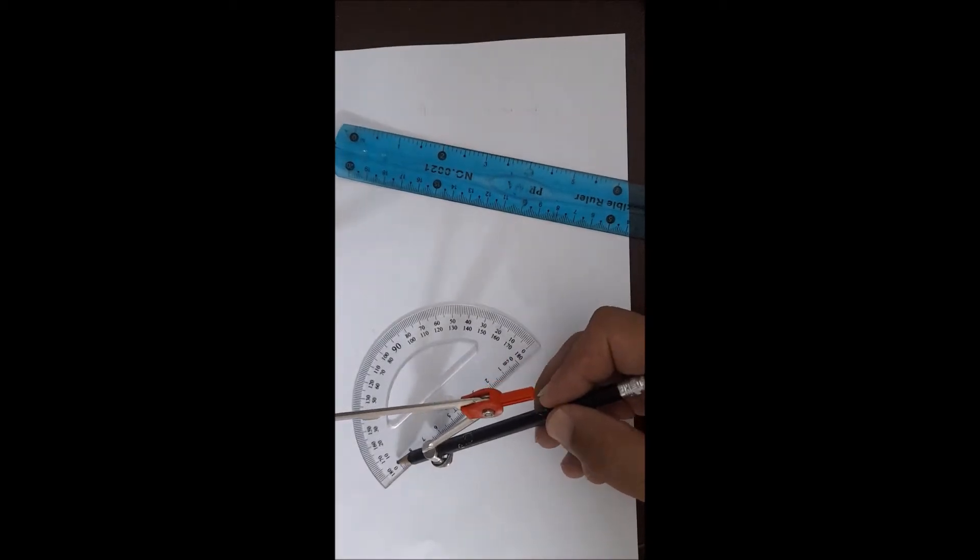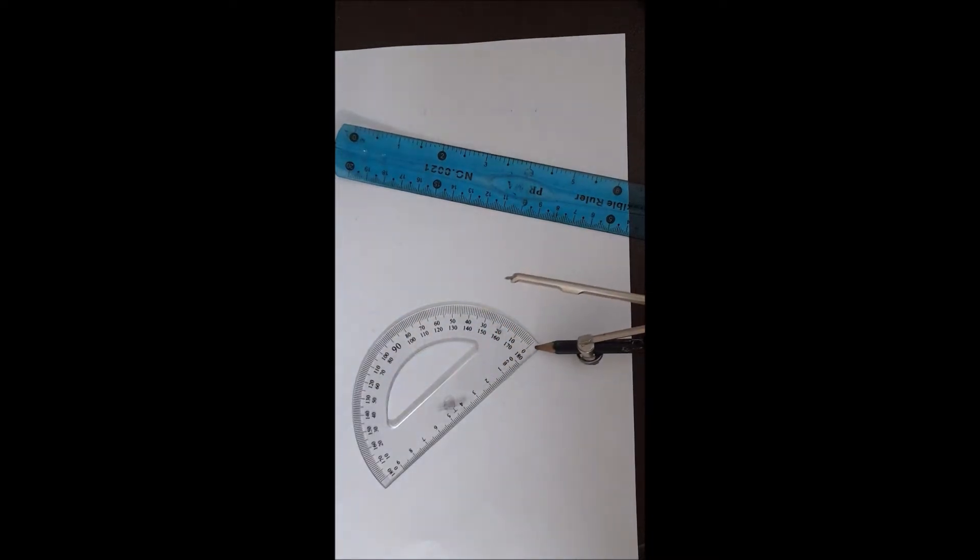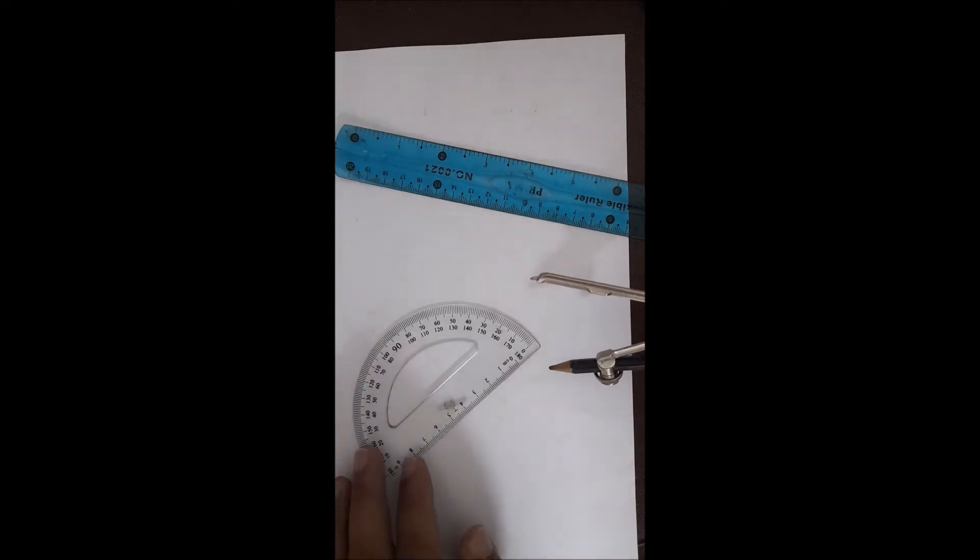One is here: 0, 10, 20, 30, 40 on the inside. The other is on the right side: 0, 10, 20, 30. That is called the outer side. Now, when to use them and how to use them.